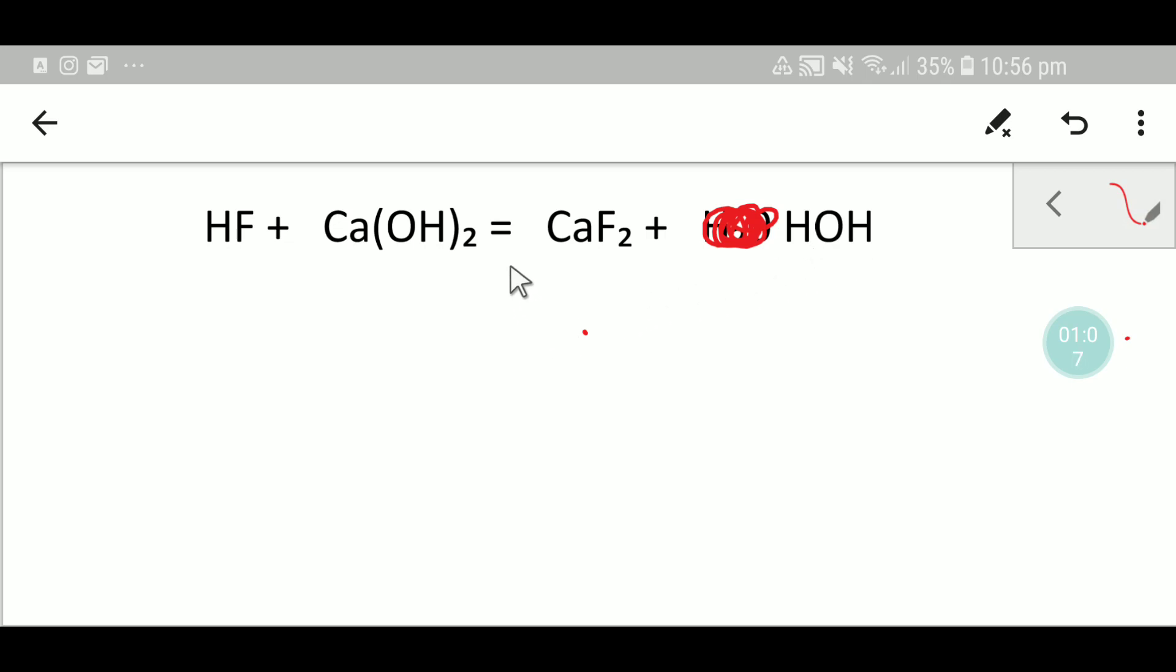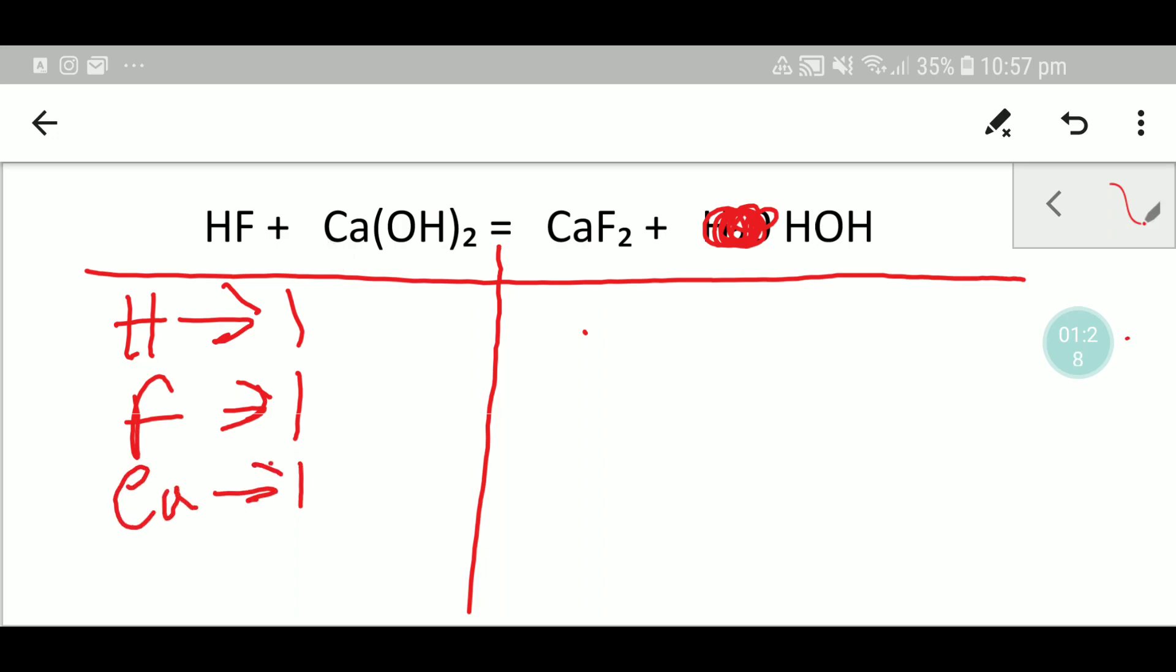Now at first let me draw a table like this. So in the left hand side we have one hydrogen, and here we have one fluorine, and here we have two fluorine and here we have one fluorine and here we have one hydrogen and here we have one hydrogen and here we have one OH.